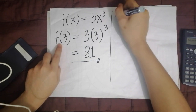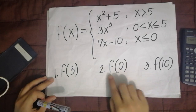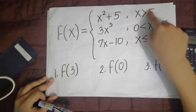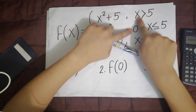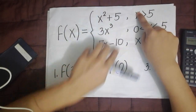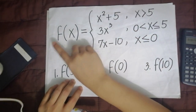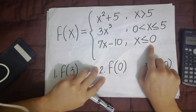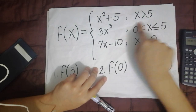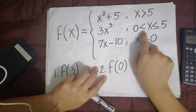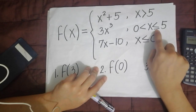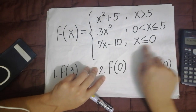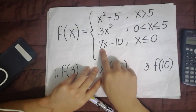Next, number 2: f of 0. The value of x is 0. Find where 0 falls in the restrictions. The first restriction has no 0 in it, so we skip that. For the second restriction — 0 to 5 — 0 is not included because there is no equal sign on the lower bound. Unlike 5, which is included because it has an equal sign. For the third restriction, x is less than or equal to 0 — 0 is included here because it has an equal sign. So the expression to use is 7x minus 10.